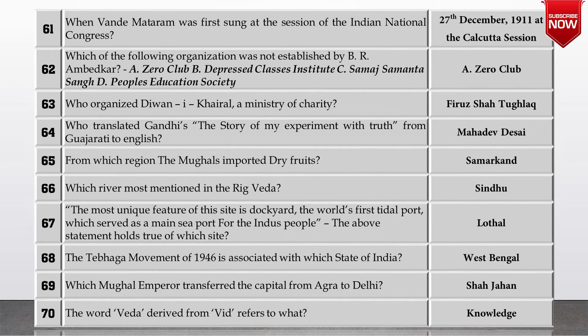The most unique feature of this site is its Dockyard — the world's first tidal port — which served as the main seaport for the Indus people. Which site? It was Lothal. Next: the Tebhaga Movement of 1946 is associated with which state of India? West Bengal. Which Mughal Emperor transferred the capital from Agra to Delhi? Shahjehan.